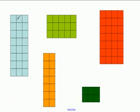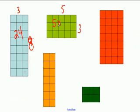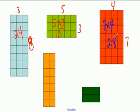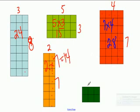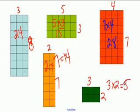To find the area of these shapes: the first is eight times three, which is twenty-four. The next is five times three, which is fifteen. This one is seven times four, which is twenty-eight. Another is two times seven, which is fourteen. And three times two is six. Area is very simple — you just multiply length times width together.